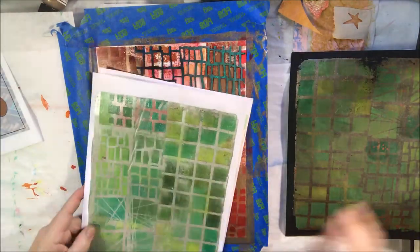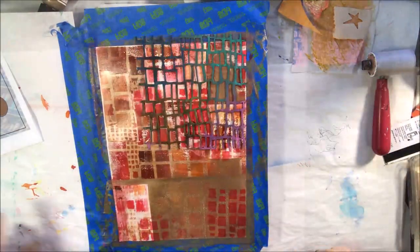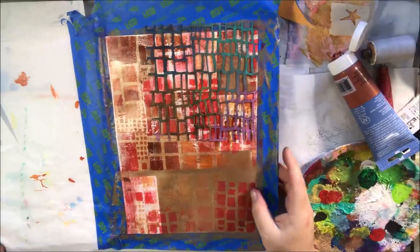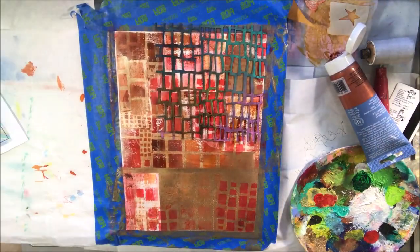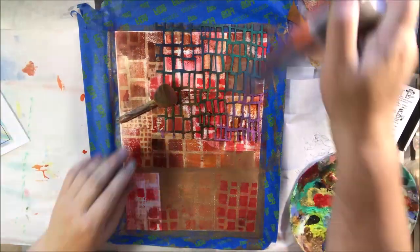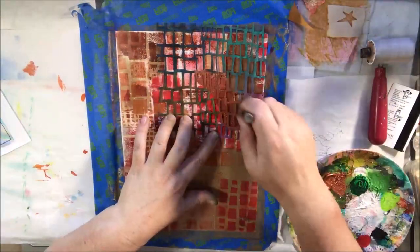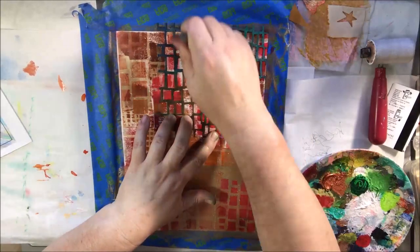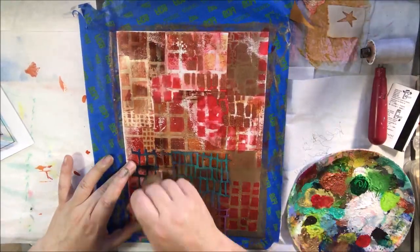I'm still not all that happy with my background. I decide to put a little bit of copper on there as well through a stencil just to integrate a little bit more, because I still feel like it's got some weird spots that I just want to add a little bit more to.